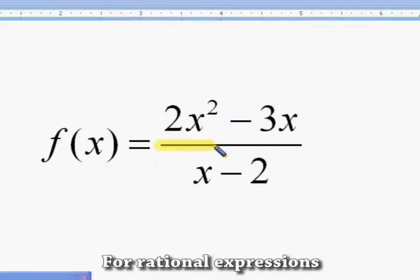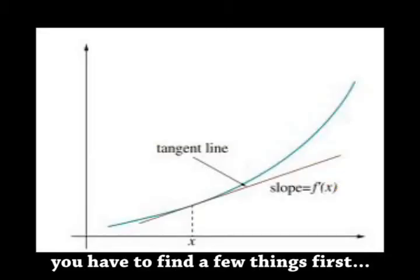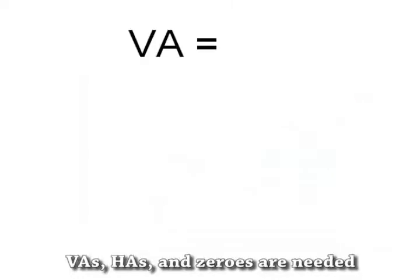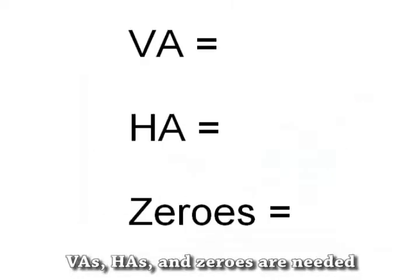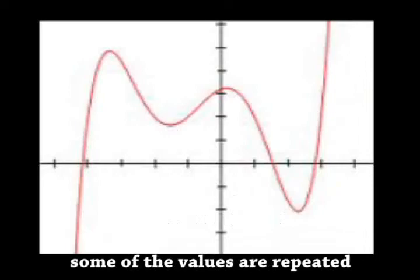For rational expressions when there's a divide, you gotta first find a few things on the side. VAs, HAs, zeros are needed, it don't matter if some of the values are repeated.